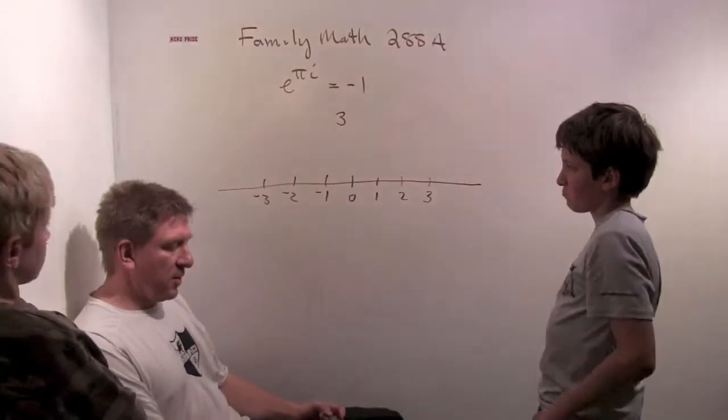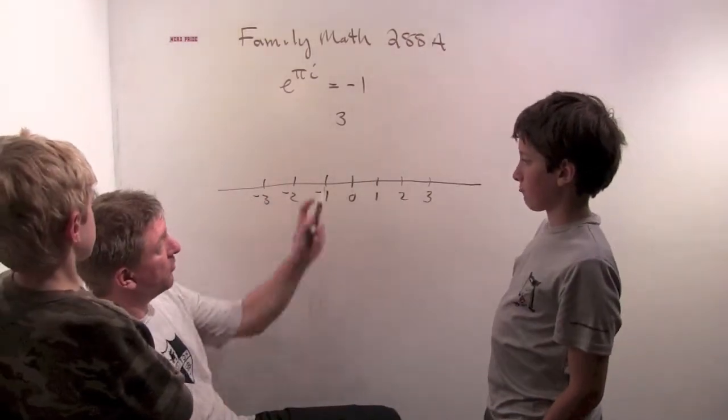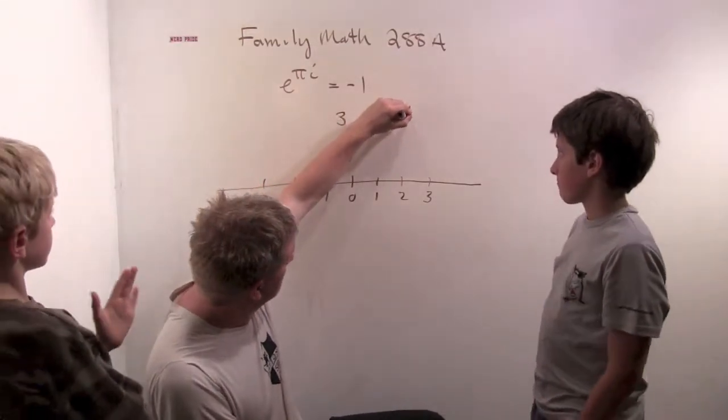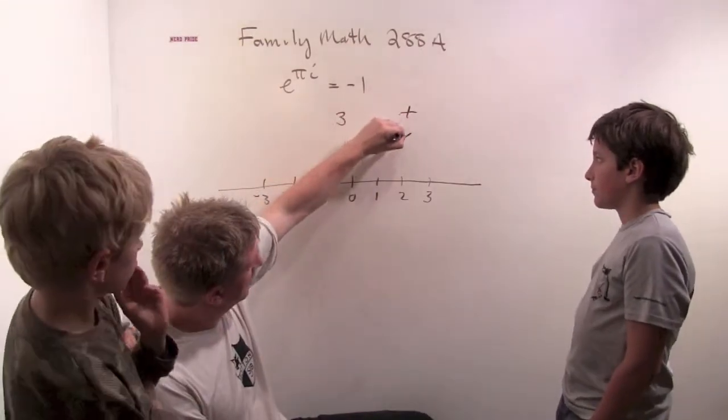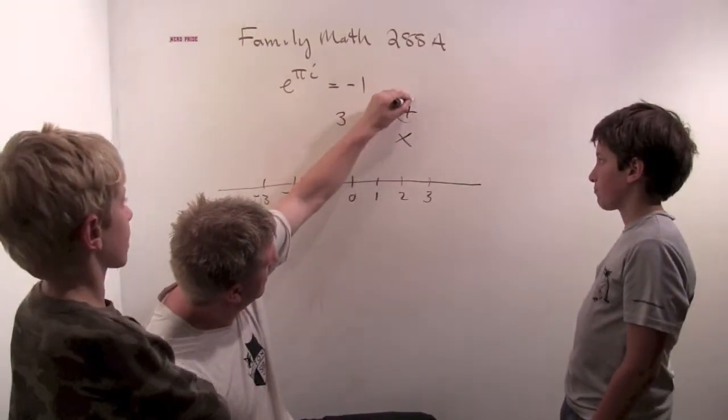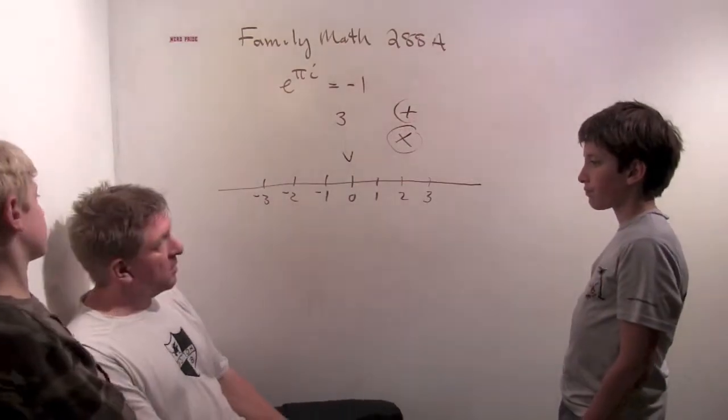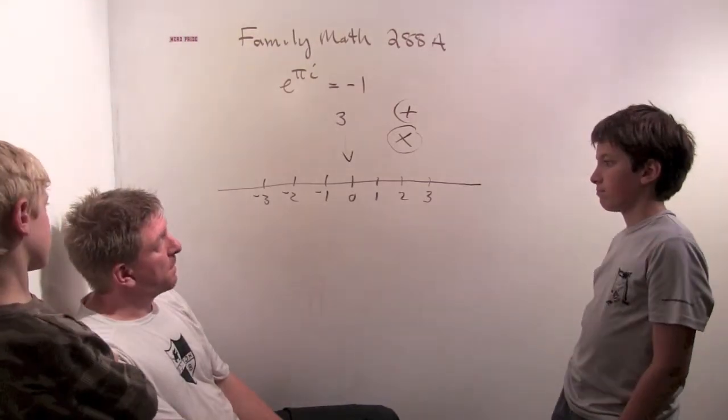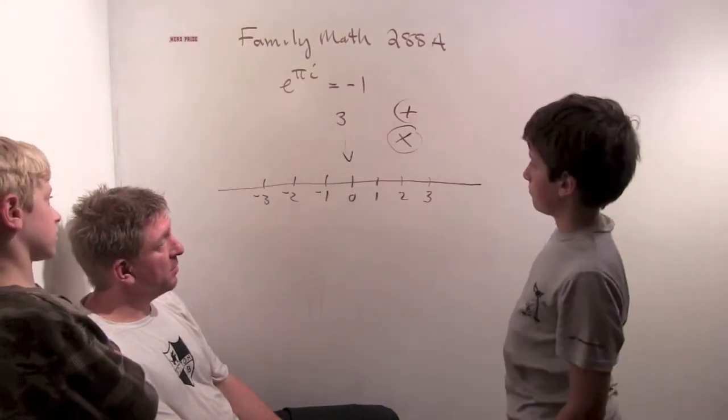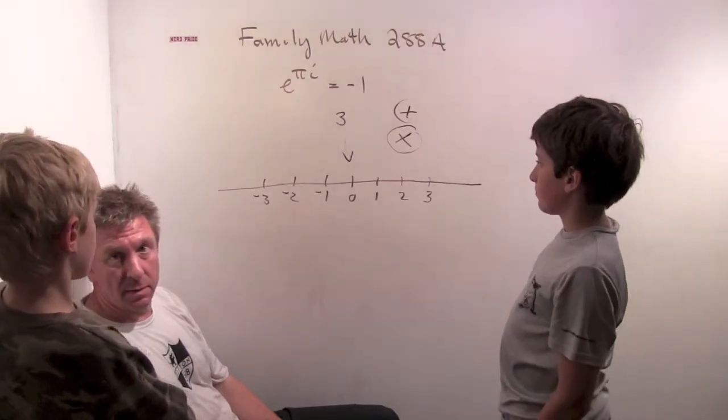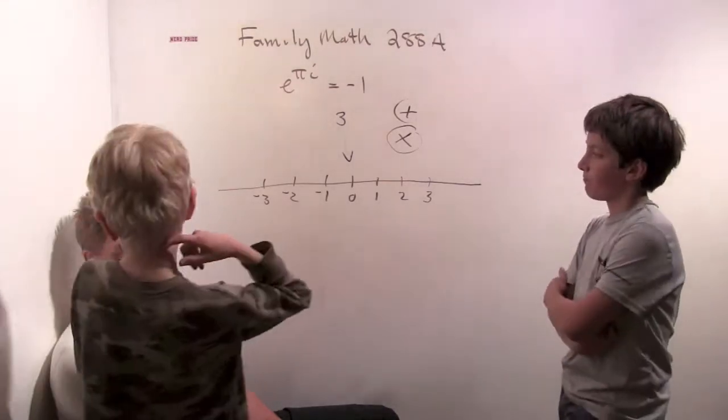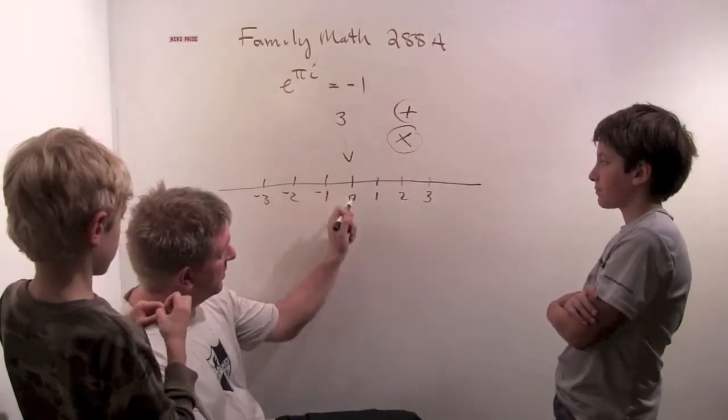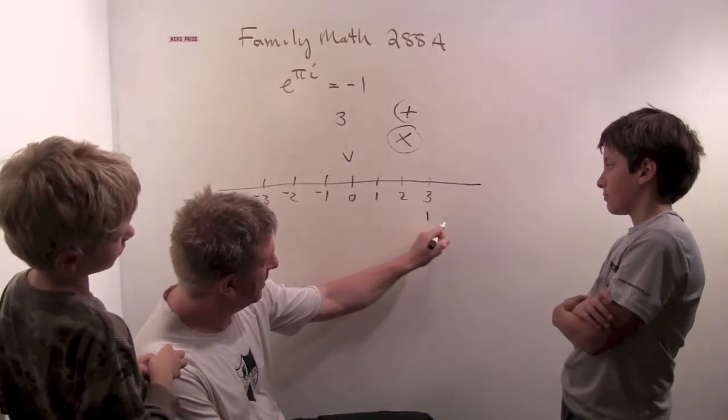And we can ask some questions about what the number 3 does to the number line when you add. Yep. Okay. Okay. So, I'll ask you about adding. What do you think the number 3 does to the number line when you add it to them? Well, if you start at 0, you have to go over 3. Okay. So, it picks up 0 and puts it down right here at 3.